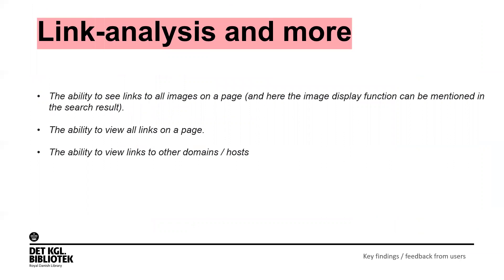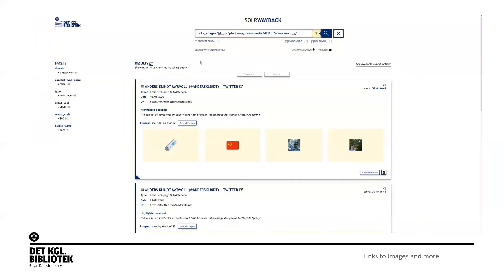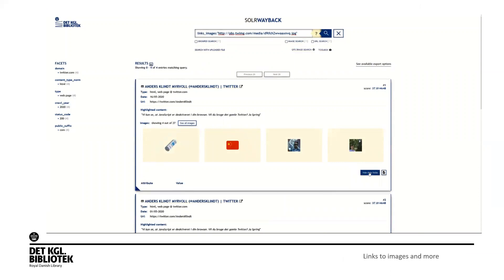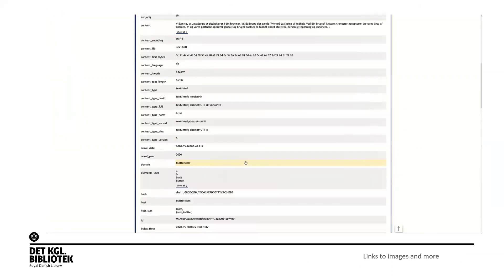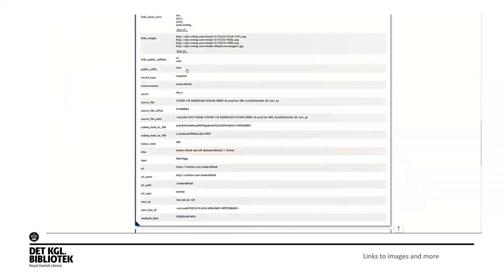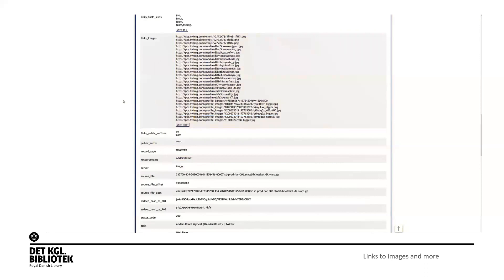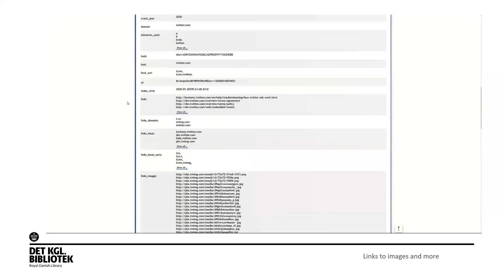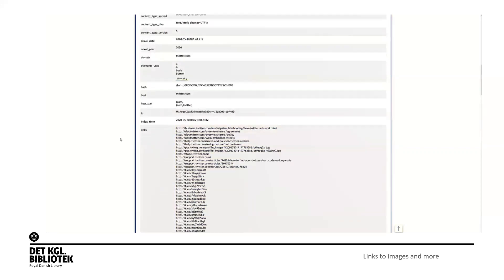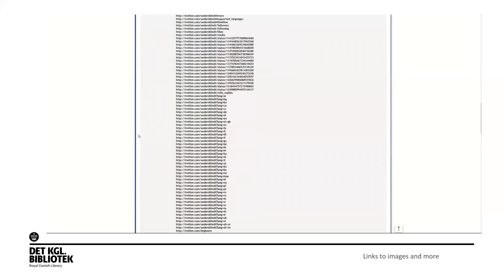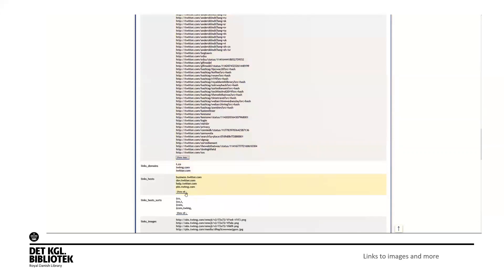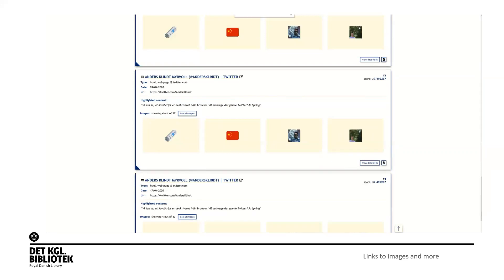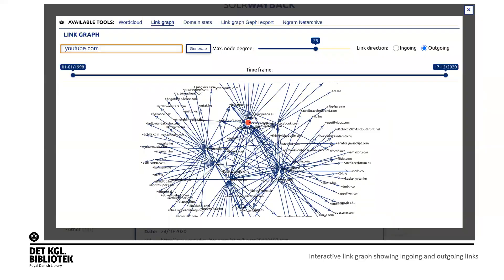Another dimension is link analysis. The ability to see links to all images on a page, the ability to view all links on a page, and the ability to view links to other domains is pretty powerful. Using the same site as before, I can scroll down and see links to all images, see all links on a page, and also see the link domains and link hosts. There's also an interactive link graph with ingoing and outgoing links in Solar Wayback itself.